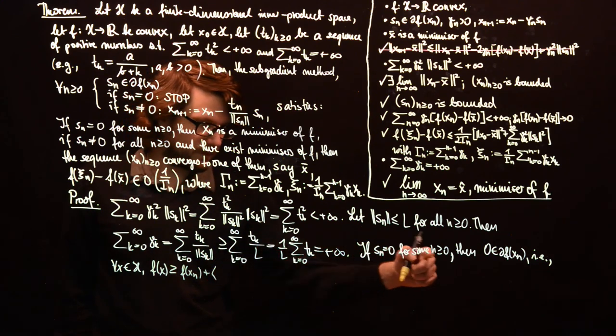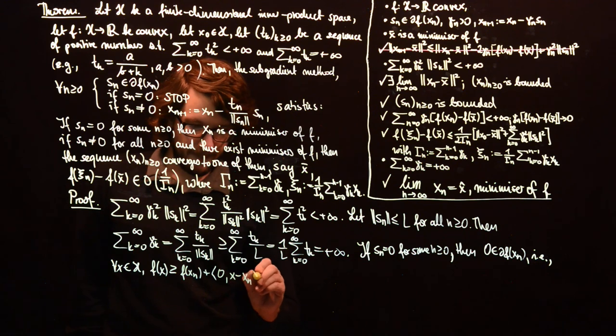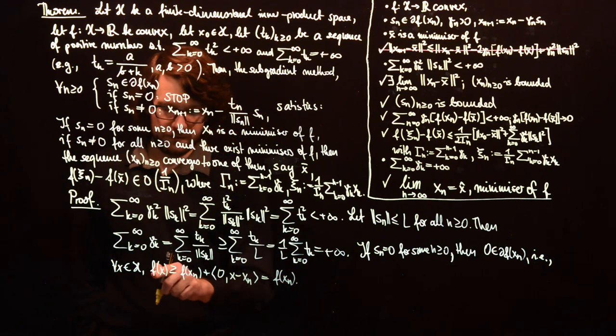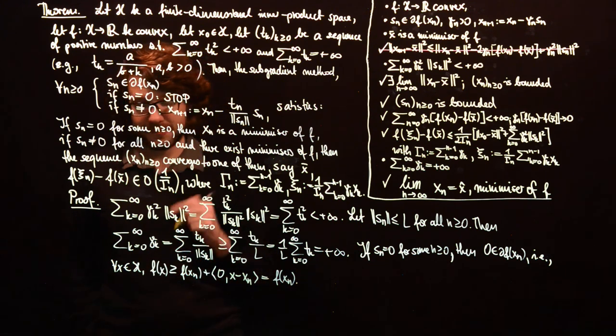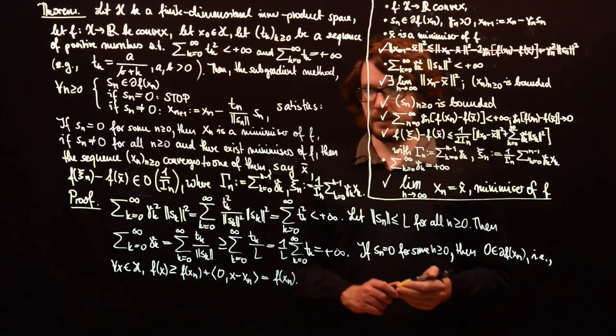So this is f of x_n. So f of x greater or equal than f of x_n for all x in H, which means that x_n is a minimizer.